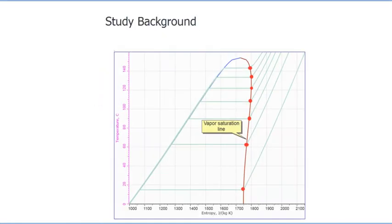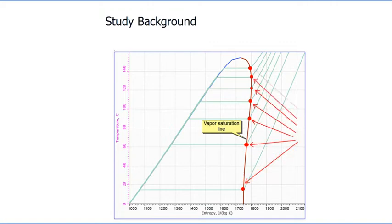Temperature is limited to 400 Celsius, or the maximum available for the used fluid. Study background: it is evident that the temperature on the turbine inlet for each pressure value must be higher than the fluid boiling temperature. The lowest temperature limit point lies where the pressure isobar crosses the vapor saturation line on the fluid diagram. These points are marked with red circles.